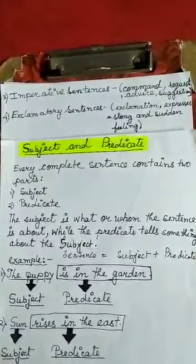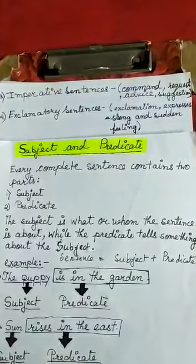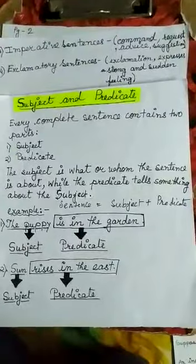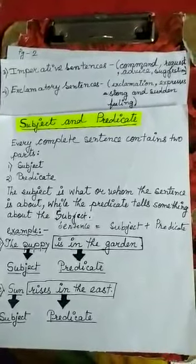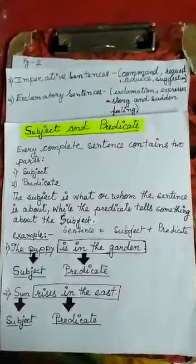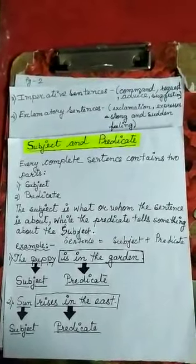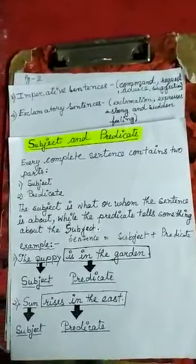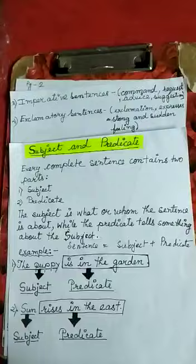All these examples are given in your book. You can write one example from each type of sentence. Now, subject and predicate — every complete sentence contains two parts: a subject and a predicate. The subject is what or whom the sentence is about, while the predicate tells something about the subject.